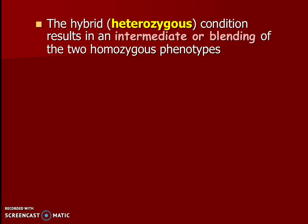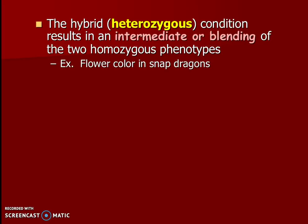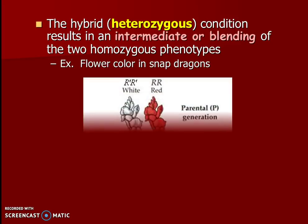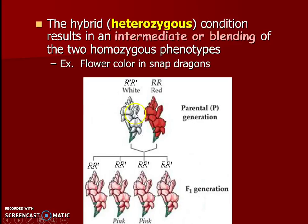The hybrid — the heterozygous — is going to result in an intermediate or blending. I would really circle the word 'blending' of the two homozygous phenotypes. For example, the color in snapdragon flowers: there can be snapdragons that are red and snapdragons that are white, and when they mate they make pink. If it was Mendelian genetics they would be either all red, all white, or some red and some white. But this is a blend — the heterozygous or hybrid version.